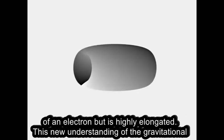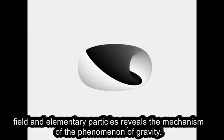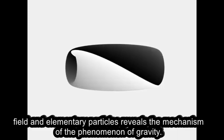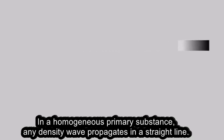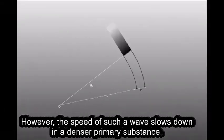This new understanding of the gravitational field and elementary particles reveals the mechanism of the phenomenon of gravity. In a homogeneous primary substance, any density wave propagates in a straight line. However, the speed of such a wave slows down in a denser primary substance.